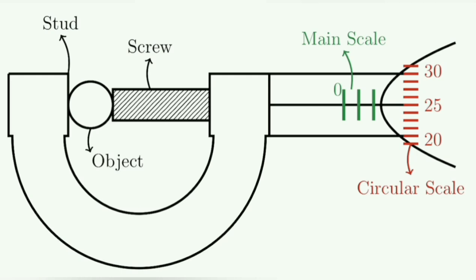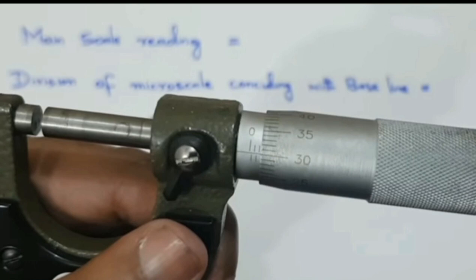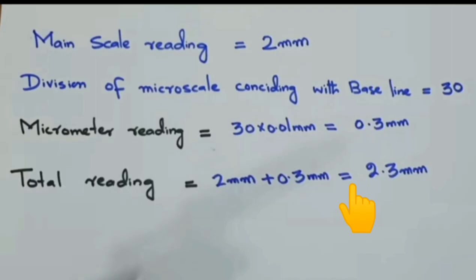This is also zero error — before you measure an object, you have to check that the screw gauge will give the correct measurement. Now how does it work? To measure an object, rotate the circular scale and lock it. Then read the main scale — here the reading is 0, 1, 2, so the main scale reading is 2 mm. Next, read the vernier scale — the circular scale division coinciding is 30. Multiply by the least count: 30 × 0.01 mm = 0.3 mm. Add the main scale and circular scale readings: 2 + 0.3 = 2.3 mm. That is the measurement of the object.